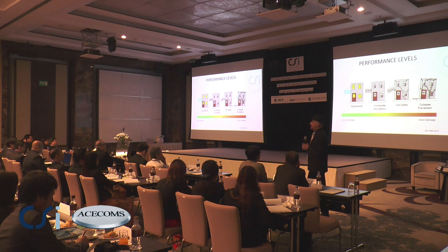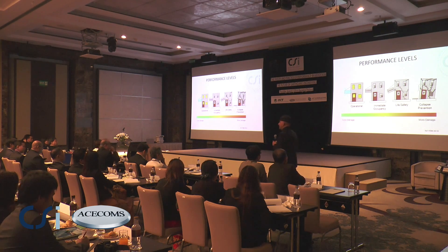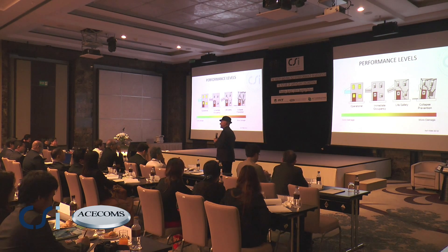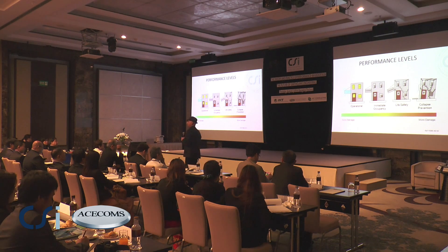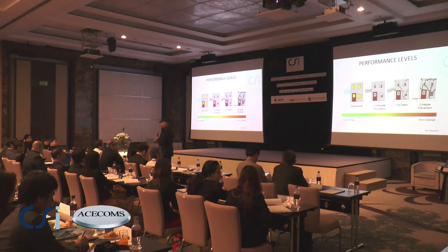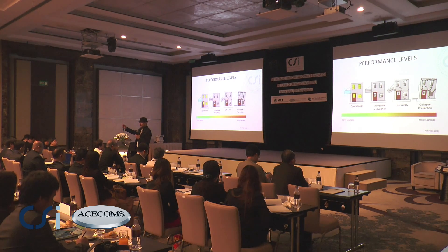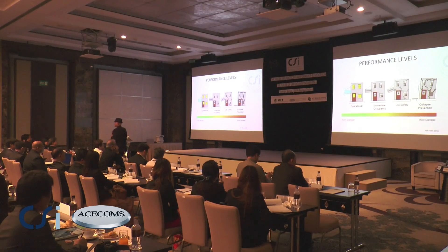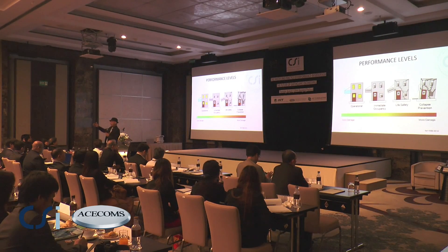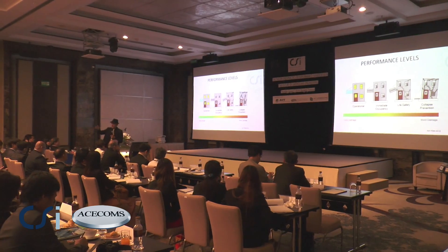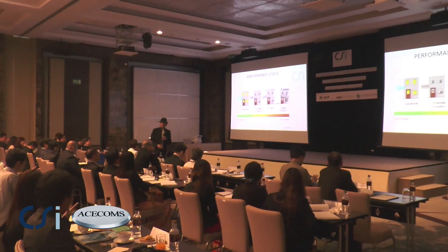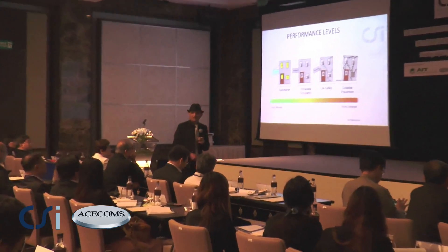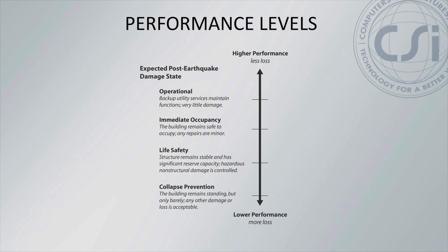What the code has done is that based upon these levels of performance, they basically come along and told you the amount of strain that you are allowed. So if you have a particular beam, it tells you how much rotation of the end of the beam is allowed for immediate occupancy, for life safety, for collapse prevention. Because you're not talking about stresses anymore.